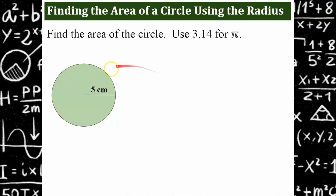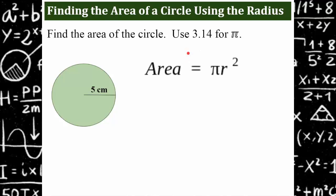Let's try an example. We have a circle that has a radius of 5 centimeters. We're going to use 3.14 for pi. You start with the formula: area equals pi multiplied by r squared. Or you could also write this as pi times r times r. Remember, an exponent shows repeated multiplication.